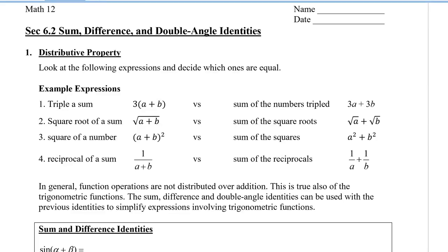In this video, we're going to take a look at the sum, difference, and double-angle identities for trigonometric functions. Before we do that, let's look at the following expressions and decide which ones are equal. We have a triple of a sum, square root of a sum, square of a number, and reciprocal of a sum. Decide which of these four are the same as the expanded versions on the right. Pause the video now and decide which ones are equal.